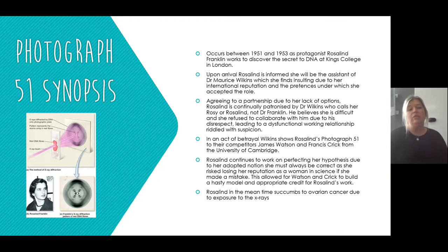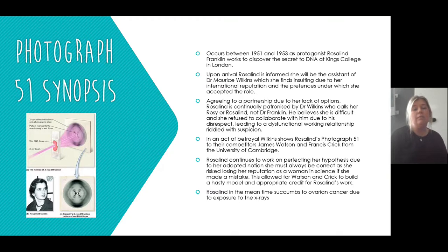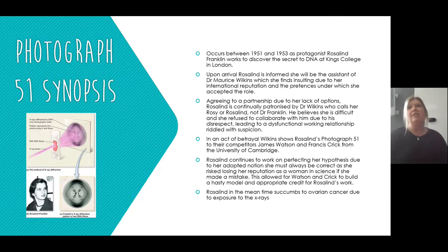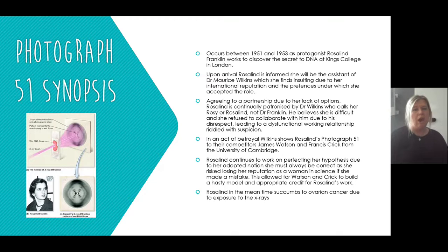Rosalind continues to work on perfecting her hypothesis, driven by an adopted notion that she must always be correct, as she risks losing her reputation as a woman in science if she makes a single mistake. These pressures are both extrinsic — look at the comments made by her father — and adopted intrinsically, in that she must be perfect to maintain her reputation. She doesn't have the same freedom the men have to make mistakes. In the meantime, Rosalind succumbs to ovarian cancer due to exposure to X-rays — a very ironic ending.